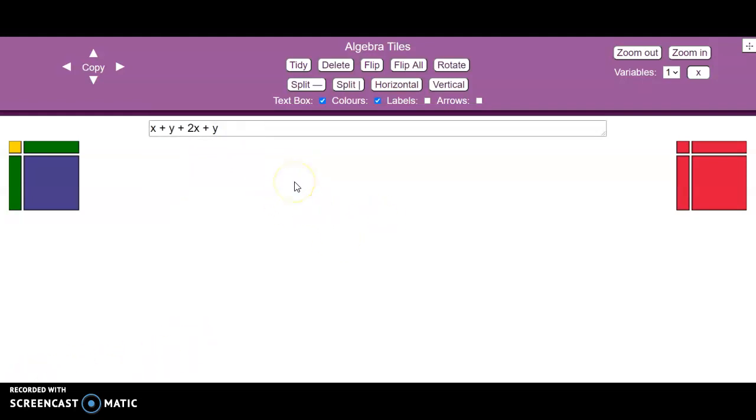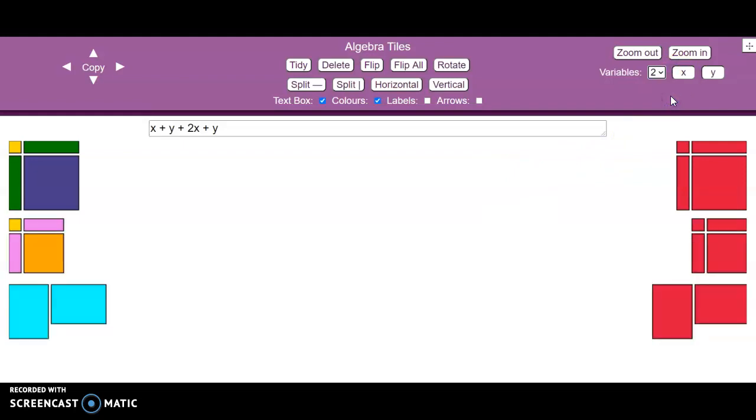So now we've got x plus y plus 2x plus y, so we've introduced a y as well, another variable. So what we can do is click on the variable to pull down to show 2. So now it shows we've got an x and a y. It doesn't have to be an x and a y, it could represent whatever we want it to, but in this case it will.